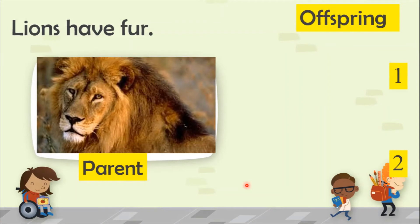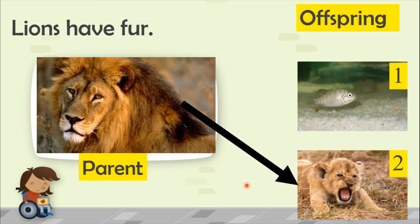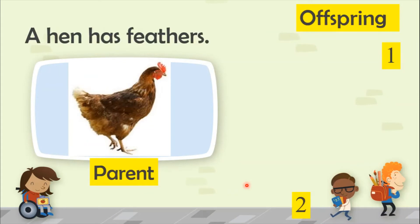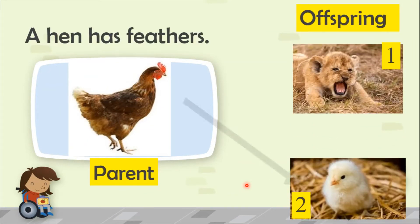Lions have fur. Can you match the parent to the offspring? That's the parent and that's the offspring — they both have fur, same shape but different sizes. A hen has feathers. Where is the offspring of the hen? That's right, animal number two. That's the parent and that's the offspring.